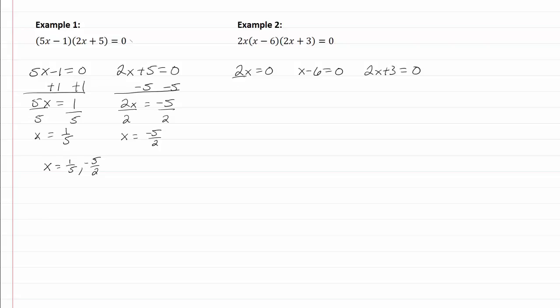So we solve for the first one by dividing by 2 and we get x is equal to zero, zero divided by any number remember is zero. Go to the second one, I'll add 6 to both sides and I get x is equal to 6.